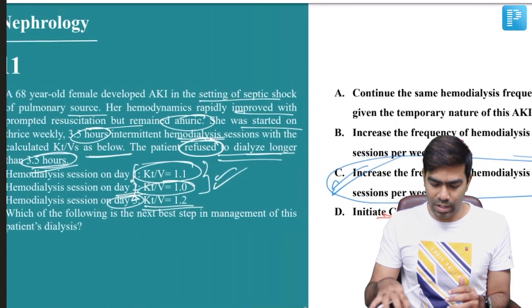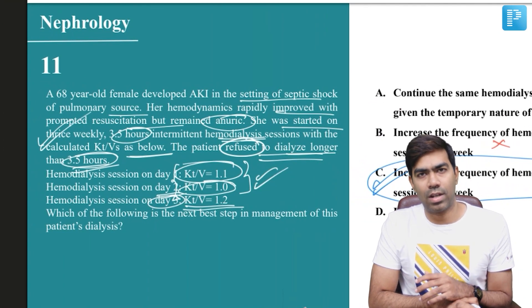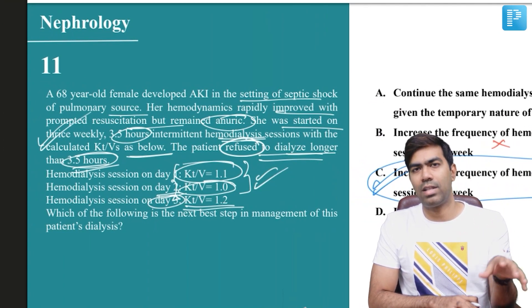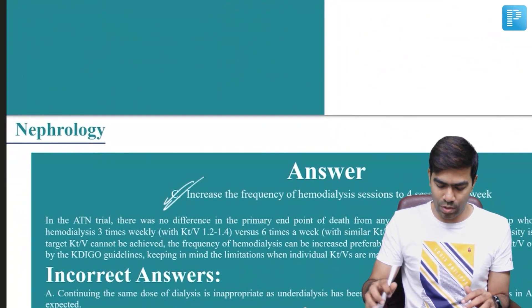Option D: Initiate CRRT. This is not recommended because in a patient who is hemodynamically stable like she is, we are not going to go for CRRT. Only in patients who are hemodynamically unstable do we go for continuous renal replacement therapy. So the right answer for this question is going to be option C.